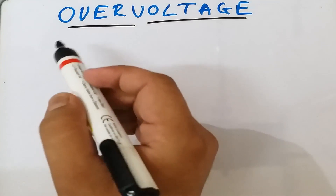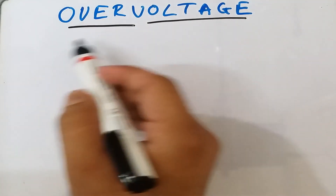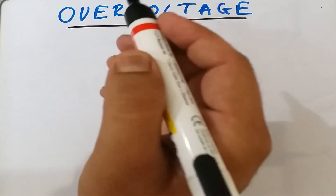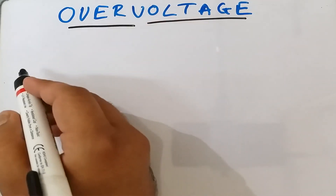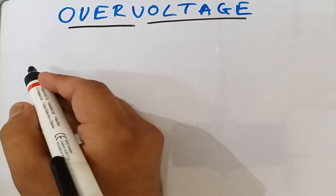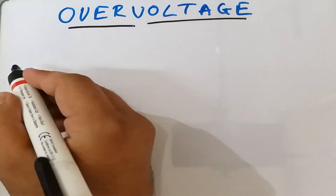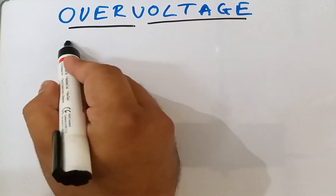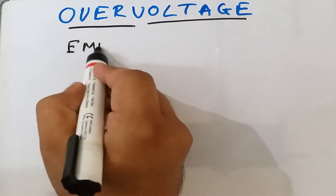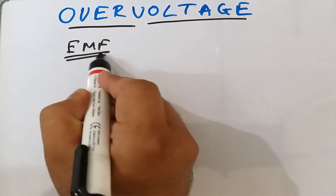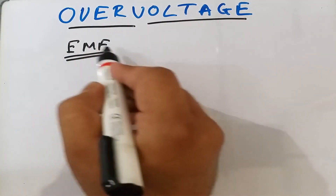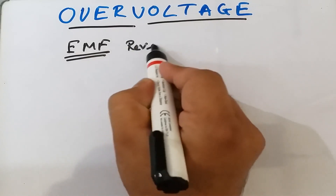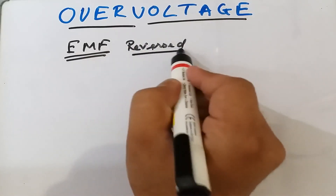Hey friends, welcome. Today we are going to discuss overvoltage, and it is also one of the topics from electrochemistry. From our knowledge of the EMF series, we all know that whenever we are applying a certain amount of opposing potential or opposing EMF to any particular cell, its cell reactions are reversed.